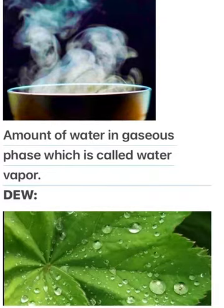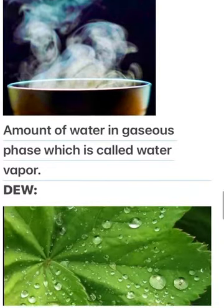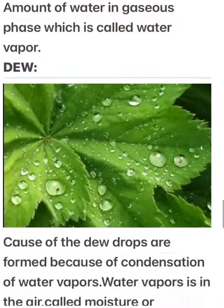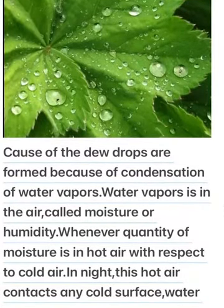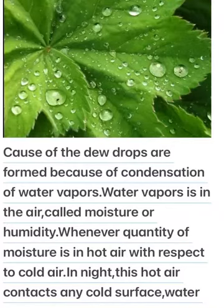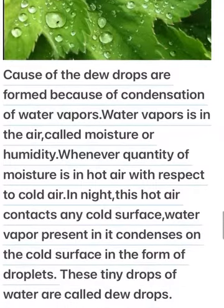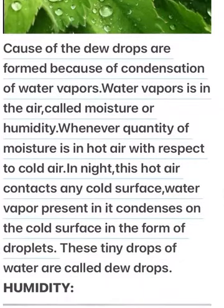Dew. Dew drops are formed because of condensation of water vapors present in the air, called moisture or humidity. Whenever there is a quantity of moisture in hot air, and this hot air contacts any cold surface at night, the water vapor present in it condenses on the cold surface in the form of droplets. These tiny drops of water are called dew drops.